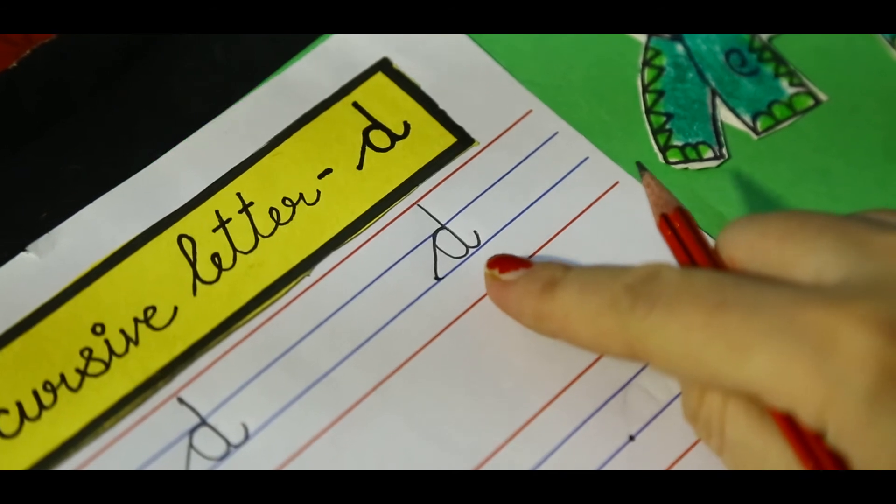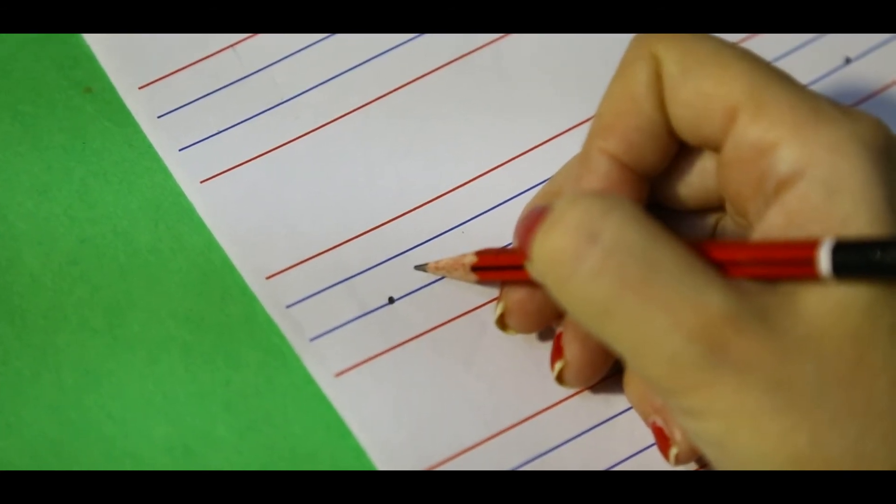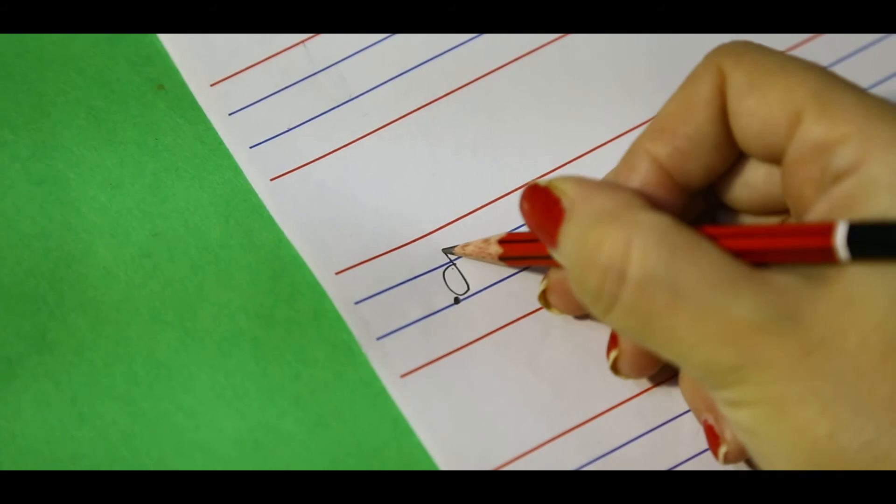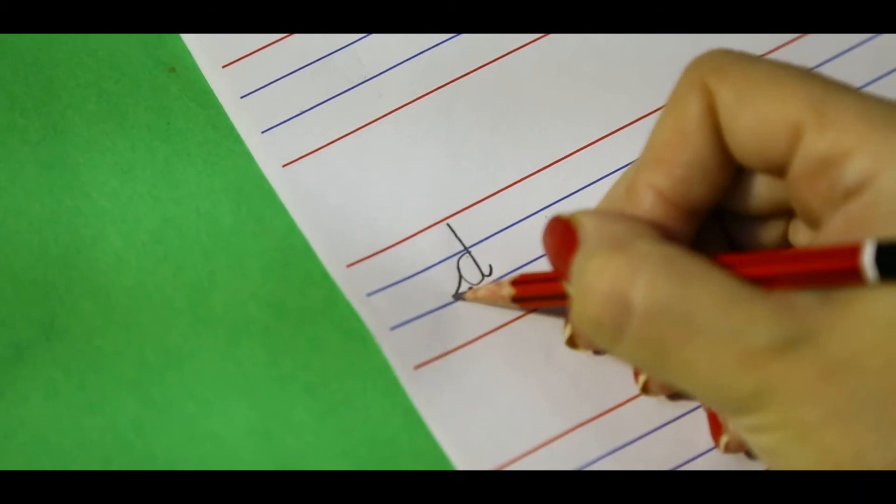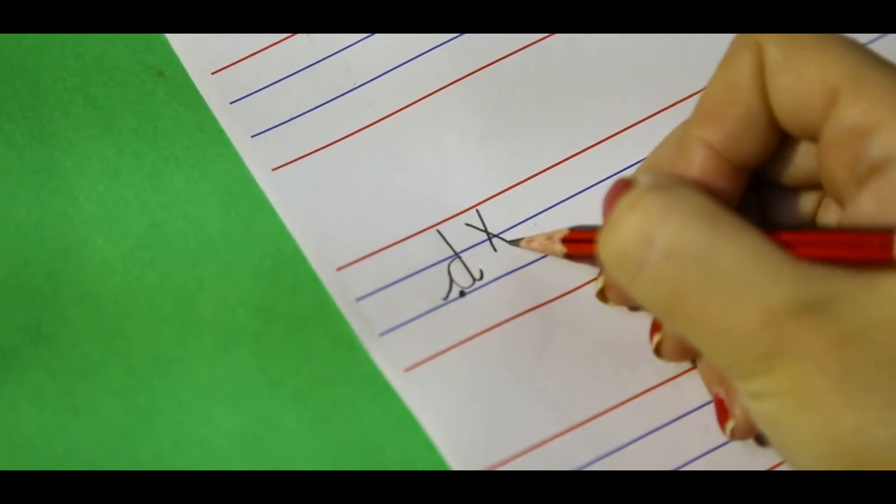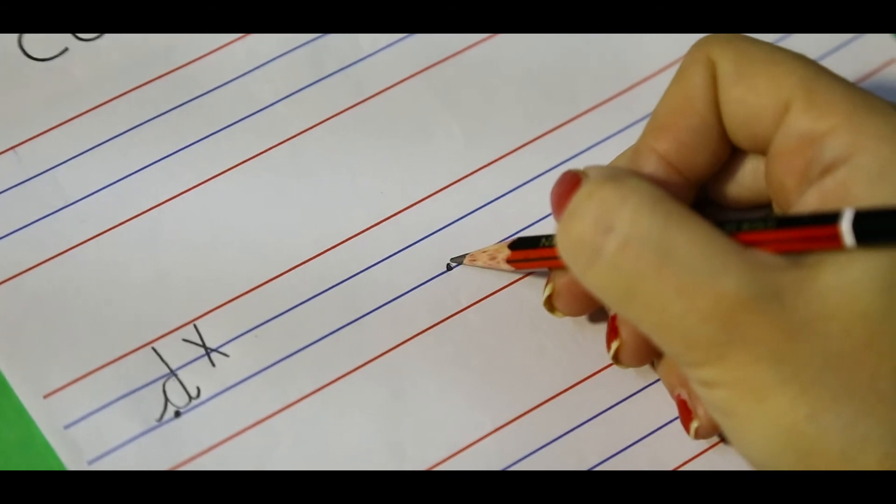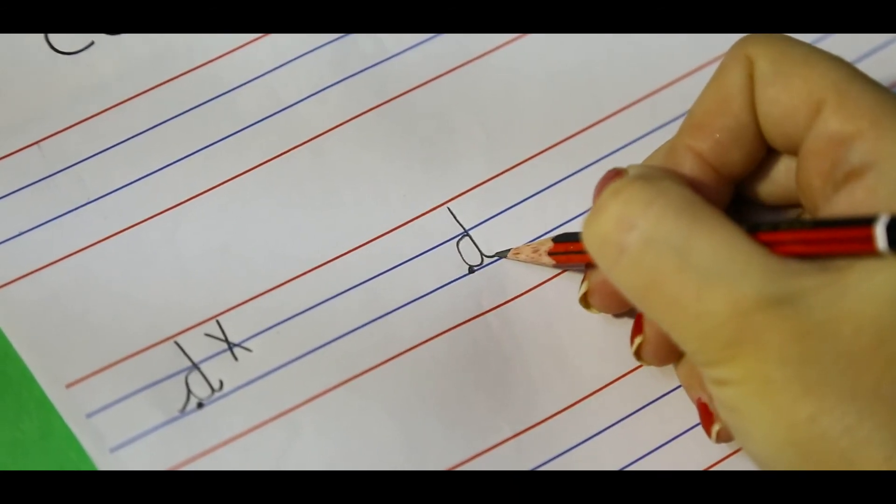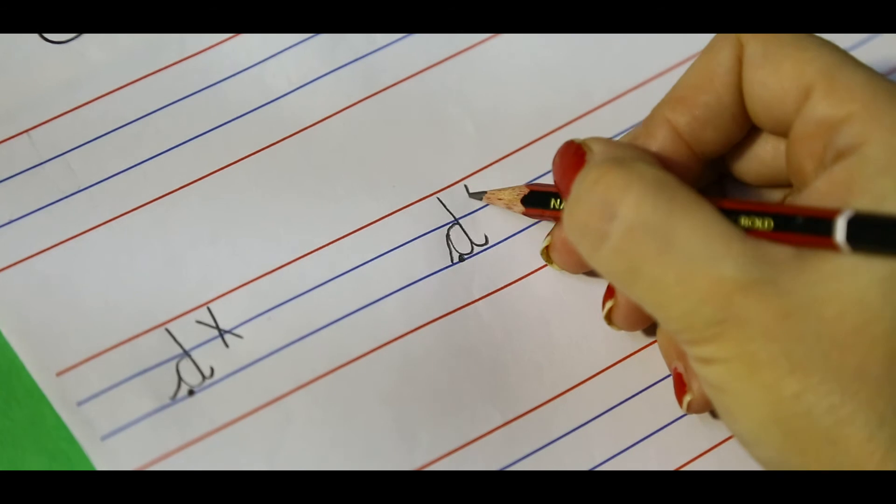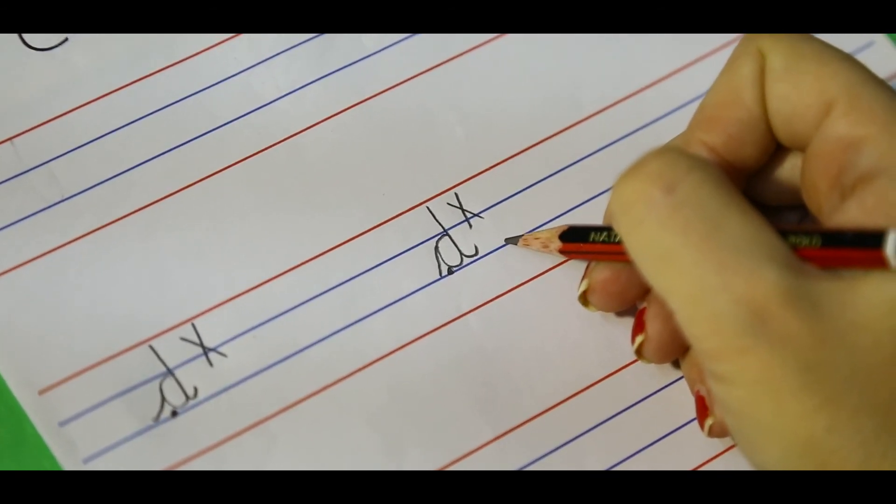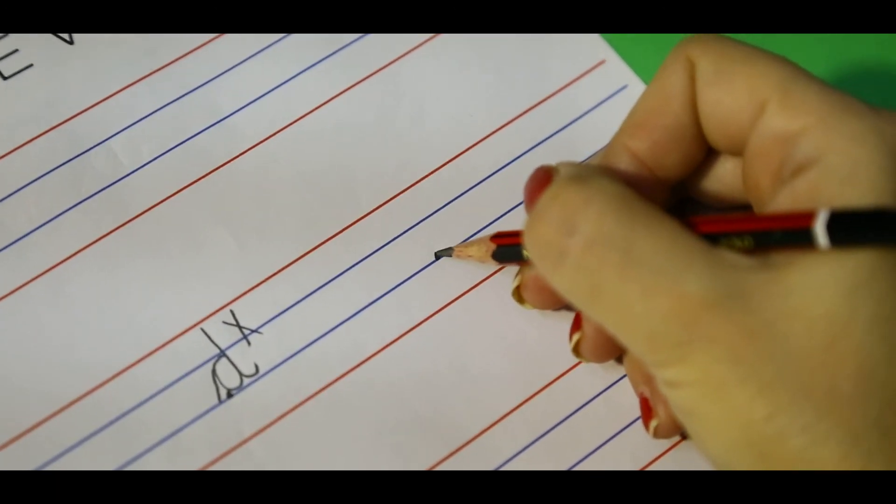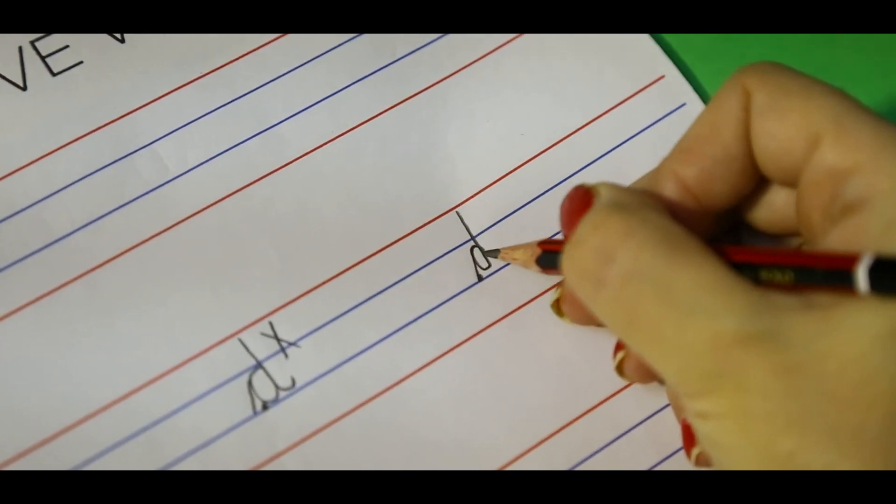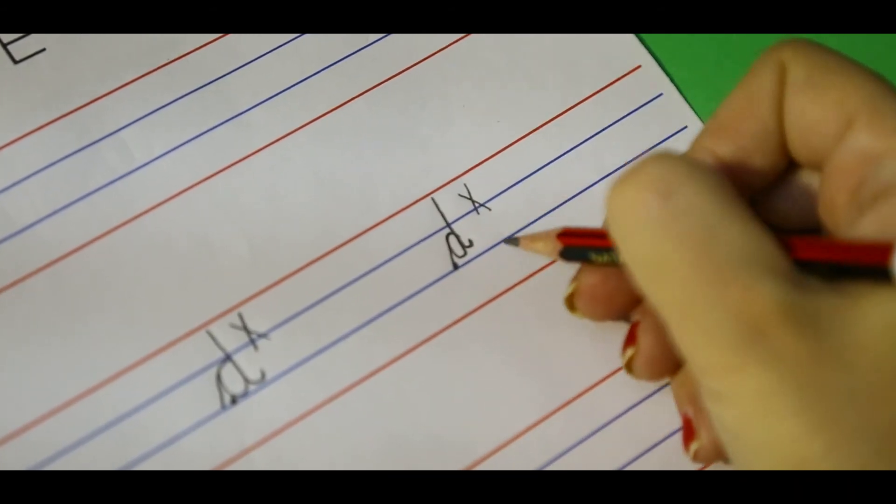This is small cursive D. Some of my kids will make cursive D like this. This is wrong. Again, I am telling you, you have not to make cursive D like this. This is completely, totally wrong. Some of my kids will make cursive D like this. This is also wrong.